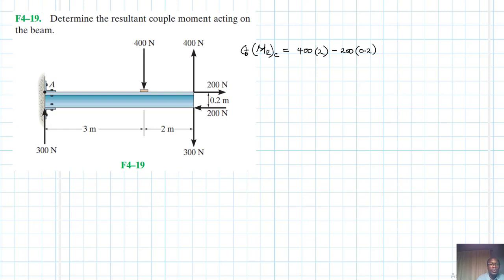also clockwise, which is negative, that's 300 by 5. Therefore, our resultant couple moment is just going to be equal to